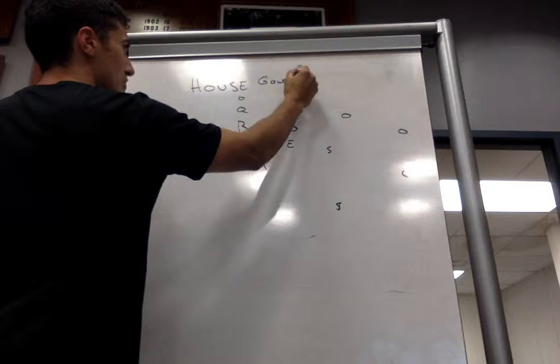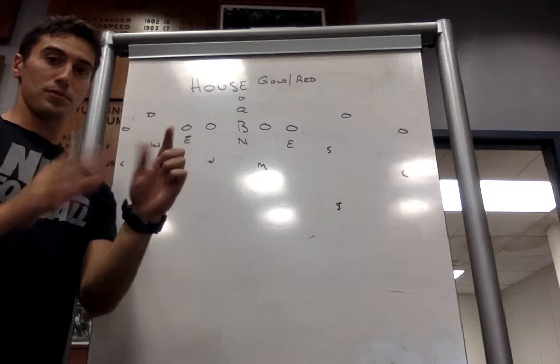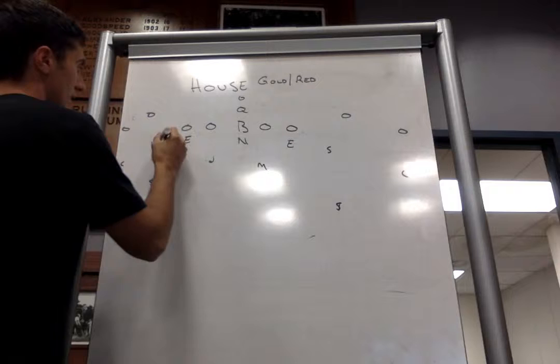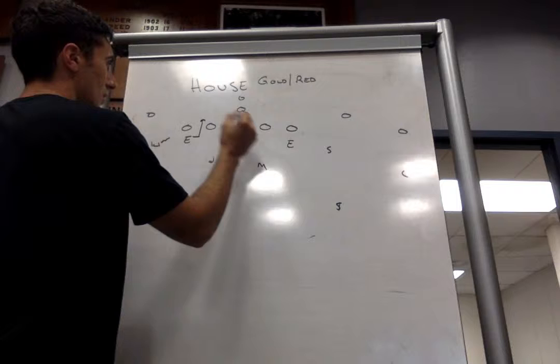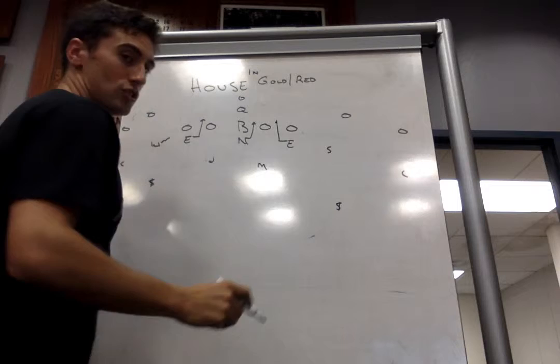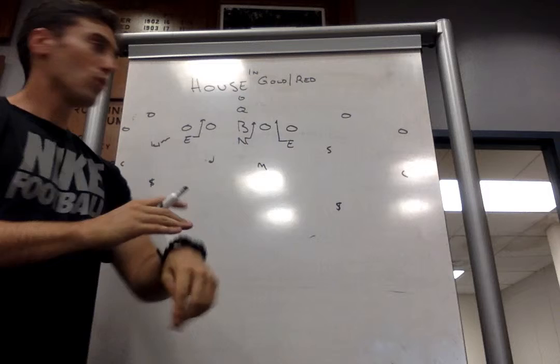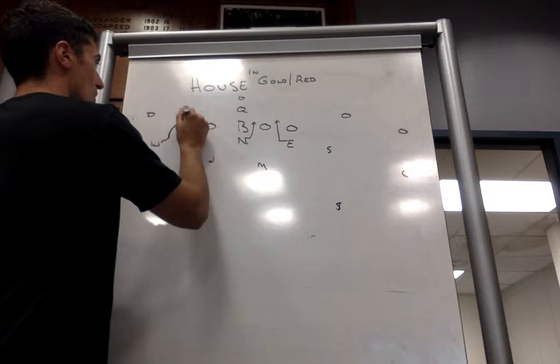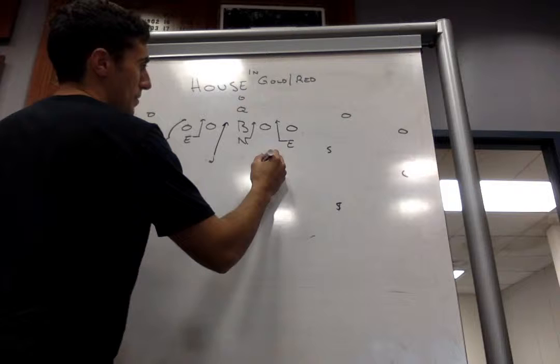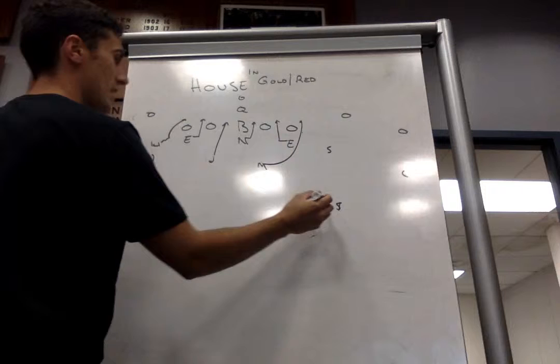Okay, so in our house blitz, this is a max blitz. We can do this out of green, but it's not great. We'll primarily do this out of our gold, and then we'll add a new coverage red. Okay, so if I go will, I'm sorry, if I go will, house, gold, telling us our wills coming, we'll do an in, this is with in, so it'll be will, in, house, gold. The instant, wills coming off the edge. Jack's going A-gap. Mike's going C-gap. We're going to spin the coverage, roll the coverage to the will.